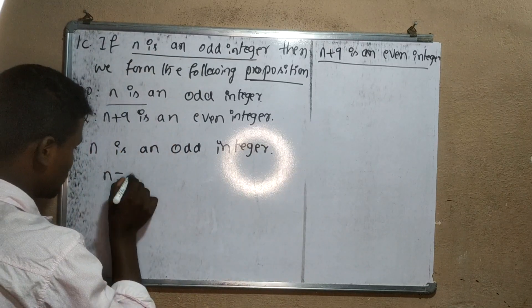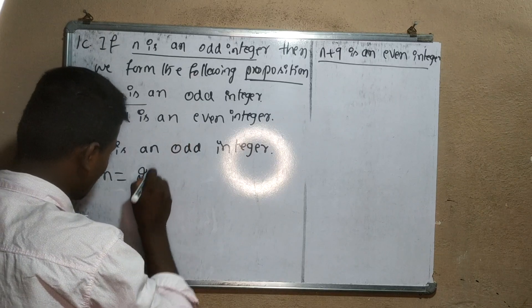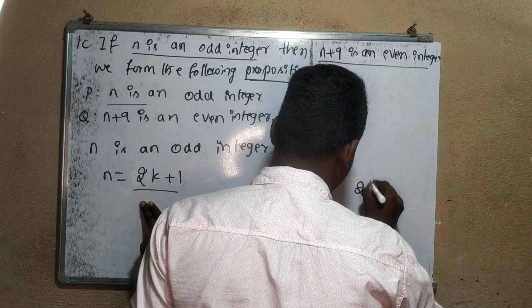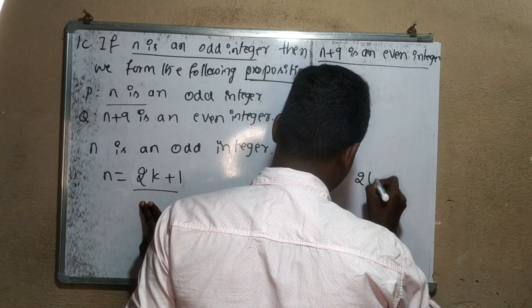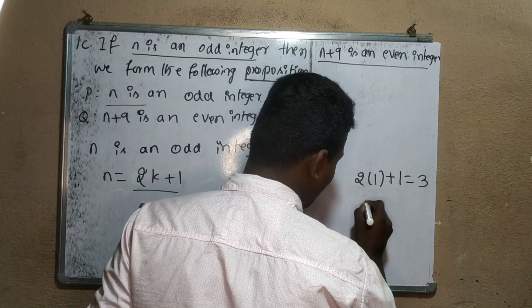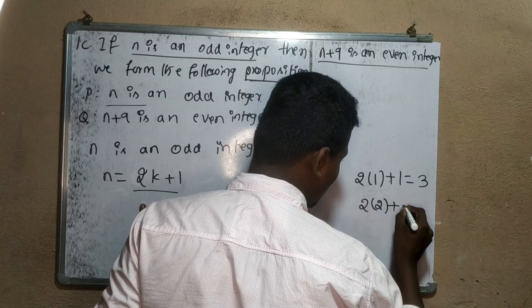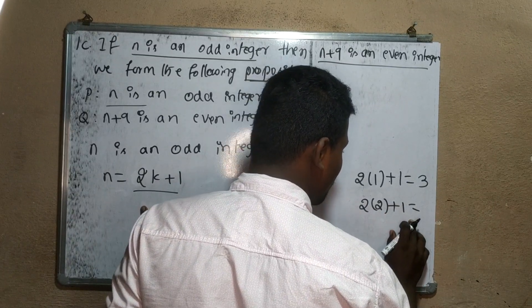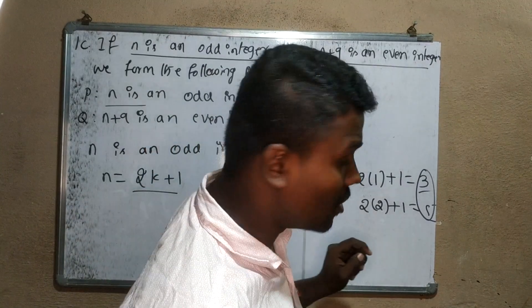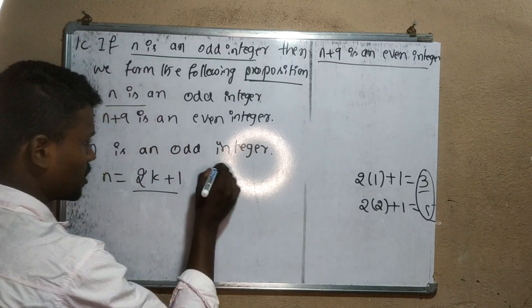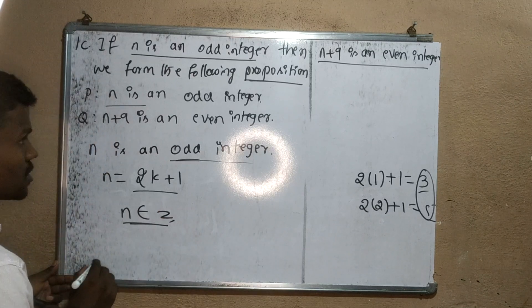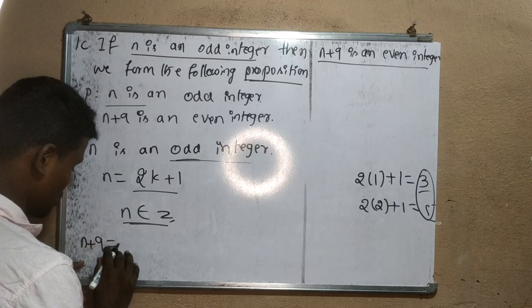Here we can solve. n is equal to 2k plus 1. Since n is an odd integer, n belongs to z. Next, n plus 9. We substitute n to get n plus 9.